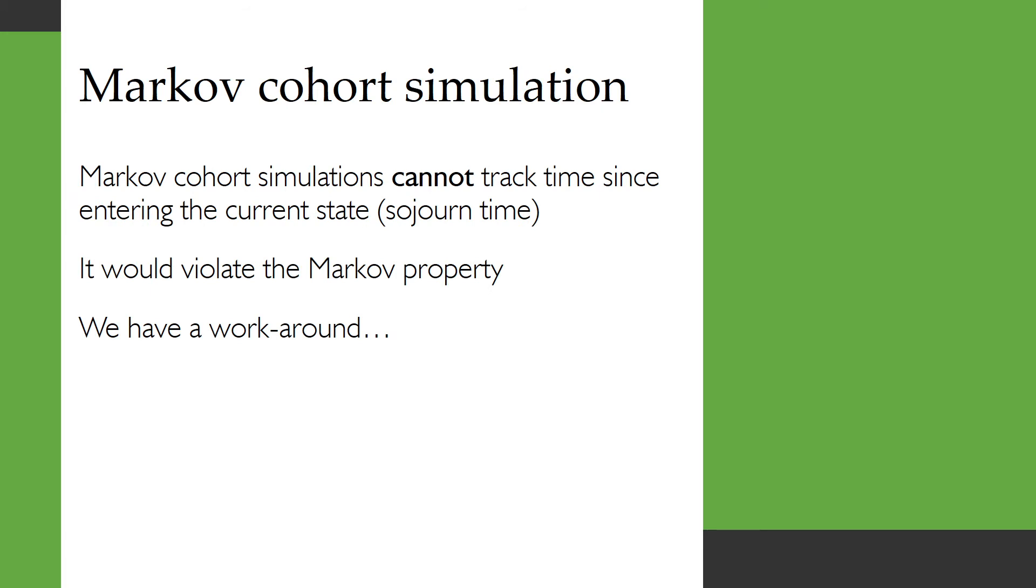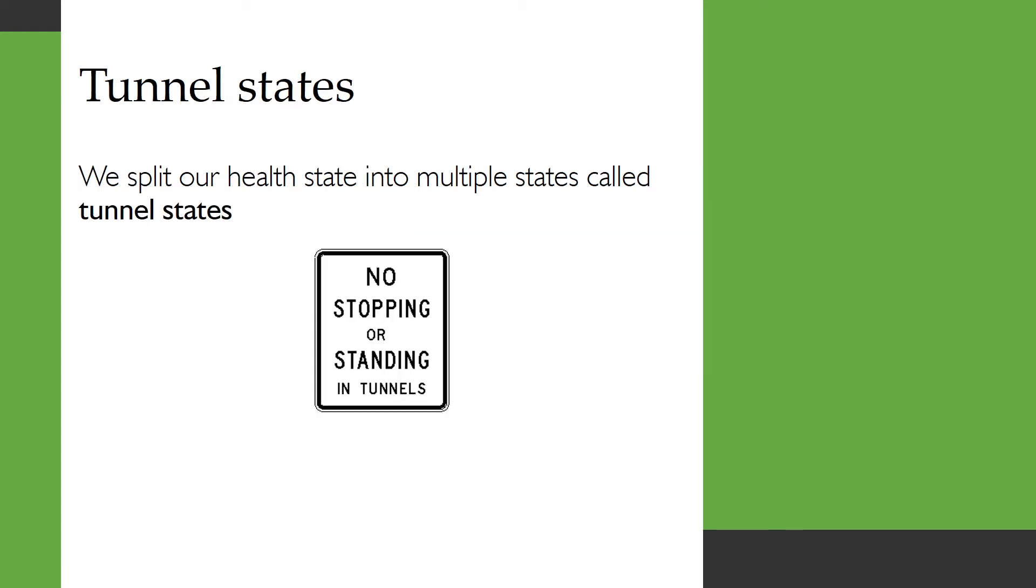Now in a Markov cohort simulation you can't track the time since entering the current state or the sojourn time because it would violate the Markov property. So we have a workaround that we use and that's called tunnel states. So what we do is we split our health state into multiple states and then some of those states are called tunnel states and the idea is that you can't stop or stand still in that tunnel. They don't have a transition back to themselves. You have to leave that state at the end of the cycle.